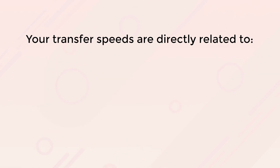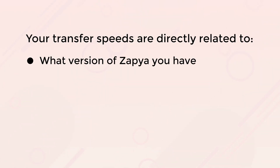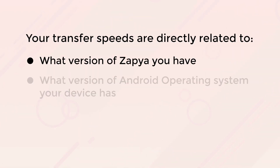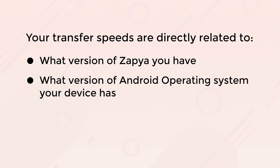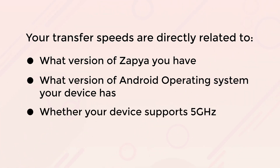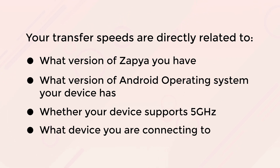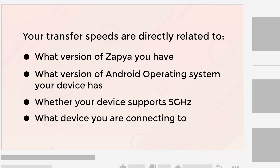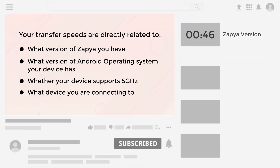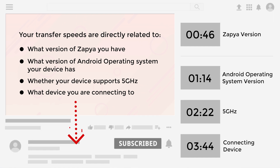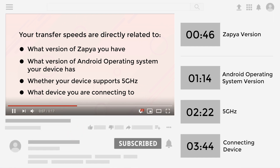Your transfer speeds are directly related to what version of Zapia you have, what version of Android operating system your device has, whether your device supports 5GHz, and what device you are connecting to. You can look at the timecodes in the corner of the screen and in the description to skip ahead to the part of the video that interests you the most. However, we recommend you watch the entire video since all four factors are directly related to each other.